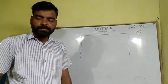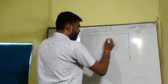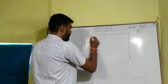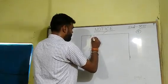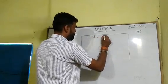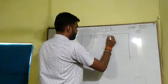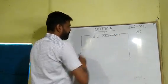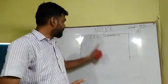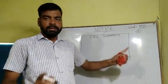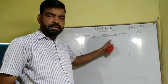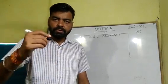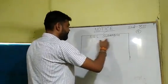Suppose our school is going to publish the notice, so at the top the name of the school will be there — for example, ISL Sudamdi. This goes at the top. You can highlight this using your black pen or your overwriting skills.